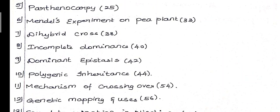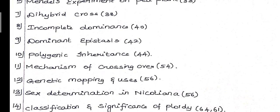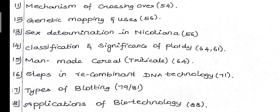Dominant Epistasis, 42. Tenth question, Polygenic Inheritance, 44. Eleventh question, Mechanism of Crossing Over, 54. Twelfth question, Genetic Mapping and its uses, sometimes 3 mark, sometimes 5 mark, page number 56.